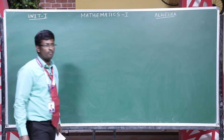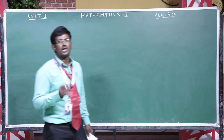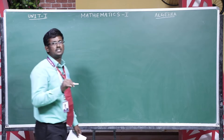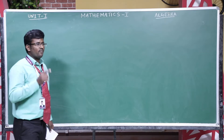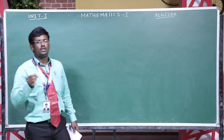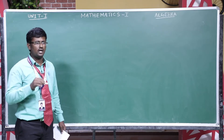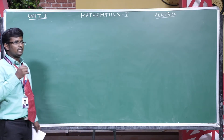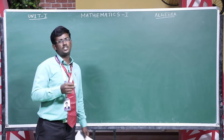Algebra is the area of mathematics that generalizes the concepts and rules of arithmetic using symbols to represent numbers. The symbols used are called variables and constants. A variable is a symbol that represents an unknown value that can take different values. A constant is a symbol that takes on a specific value.